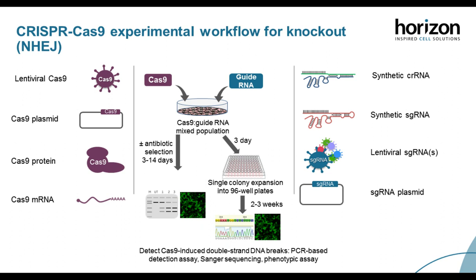Here is the experimental workflow for using CRISPR-Cas9 for gene knockout. We need two components: the Cas9 nuclease and the guide RNA. For Cas9, formats include lentiviral particles, plasmid, protein, and mRNA. For the guide RNA, options include synthetic CRISPR RNA and tracer RNA, synthetic single guide RNA, lentiviral single guide particles, or lentiviral single guide plasmids.